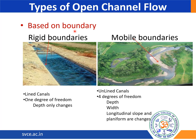Based on boundary, open channel flow is classified as rigid boundaries and mobile boundaries. In rigid boundaries, the shape of the channel remains constant over a period of time, as seen in lined canals and man-made channels. It has only one degree of freedom, i.e. the depth of flow of water will be changing. Whereas in mobile boundaries, the example is unlined canals and natural channels, where the shape of the channel keeps changing over time based on the deposition and erosion of silt particles. So based on this, the depth, width, longitudinal slope, and planform of the channel will be changing.